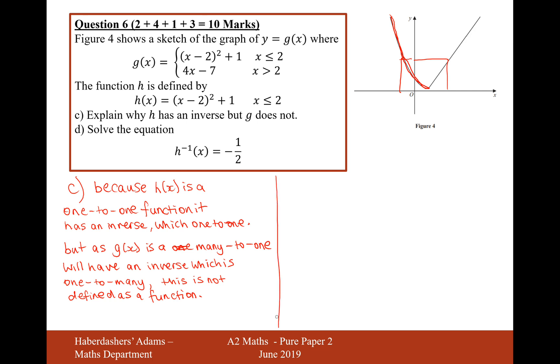Because if you put 2 into a function, you should only expect to have one output, but a one-to-many function says that if you put 2 into the function, you would expect to get many answers out, which doesn't work. So that's not defined as a function. That's the answer to part c.